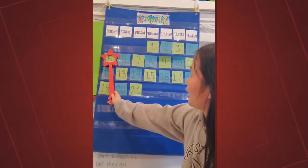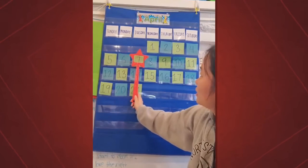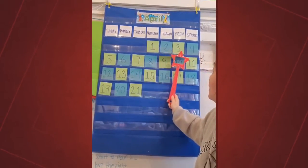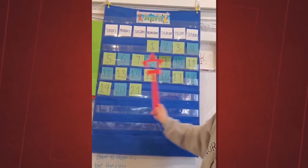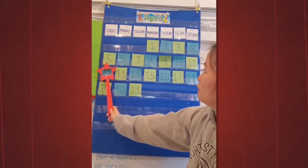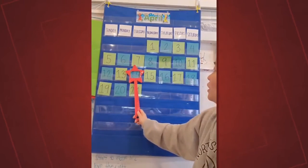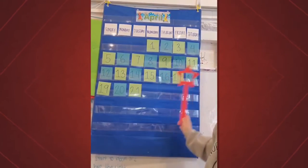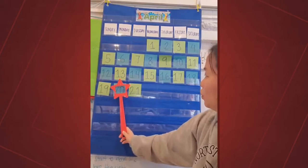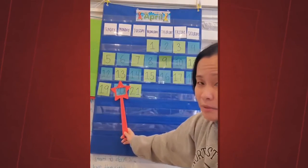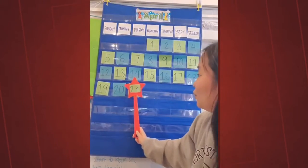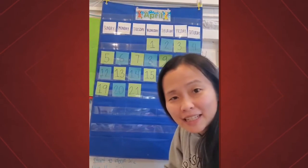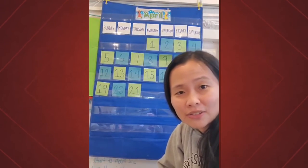Can we count? 1, 2, 3, 4, 5, 6, 7, 8, 9, 10, 11, 12, 13, 14, 15, 16, 17, 18, 19, 20 — and what comes after 20? 21! Good job everyone. Thank you for listening. Have a good Tuesday, bye!